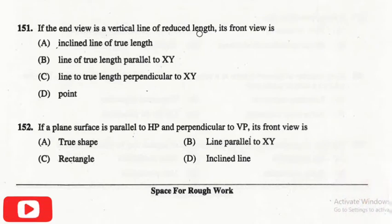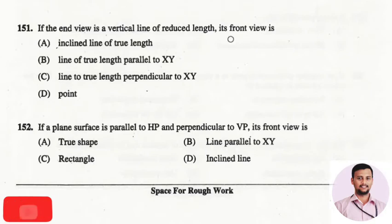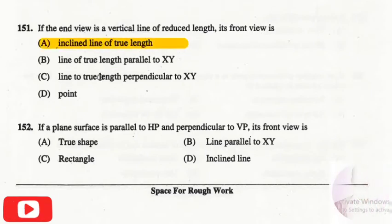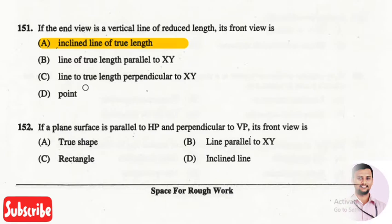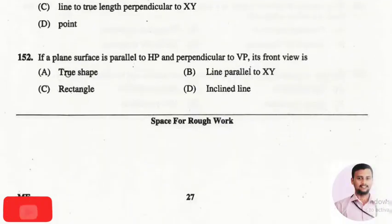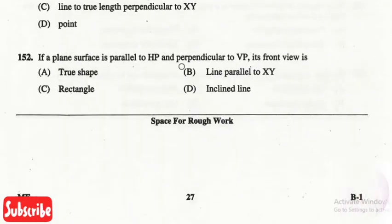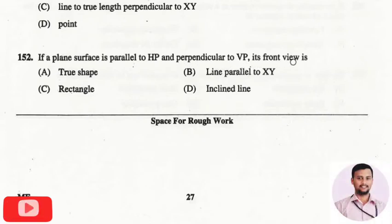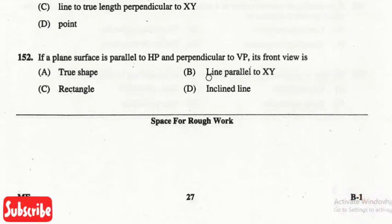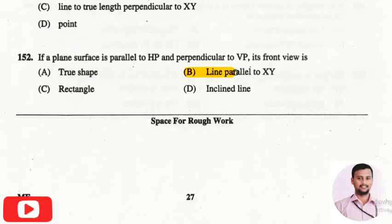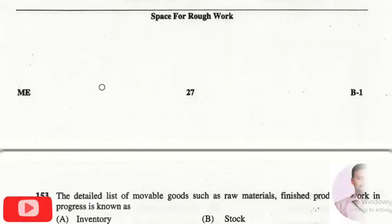The next question is: if the end view is a vertical line of reduced length, its front view is? The right answer is option one, that is an inclined line of true length. The next question is: if a plane surface is parallel to HP and perpendicular to VP, its front view is? The right answer is option two, that is a line parallel to the XY line.